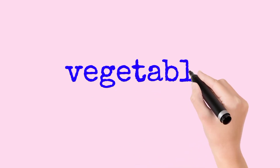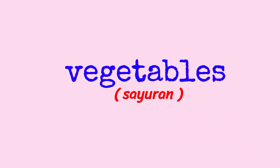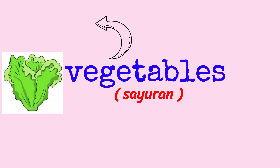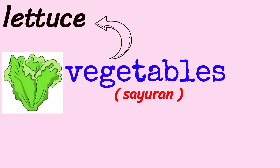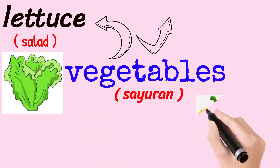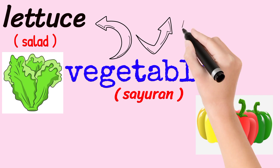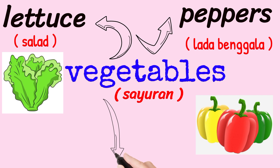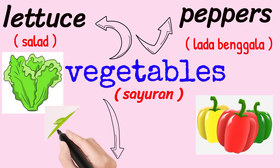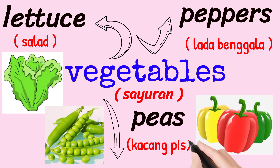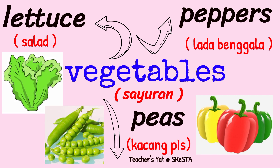Second is vegetables — sayuran. For example, lettuce (salad), peppers (lada benggala), and peas (kacang peas). Vegetables contain fiber, which keeps our stomach happy.